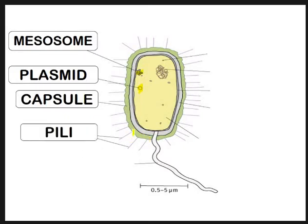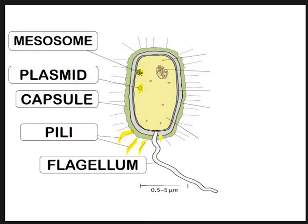Then we've got these projection structures - pili. They allow bacteria to hang on to each other and onto surfaces; they're attachment structures. There's also the tail-like structure here, the flagellum. Some bacteria will have it, some won't. If it lives in water, such as cholera, it will have one so it can swim.